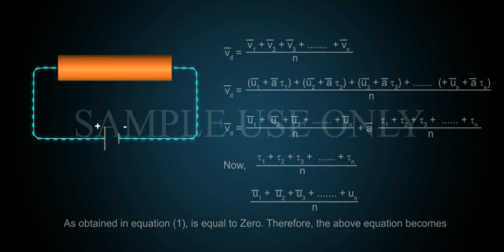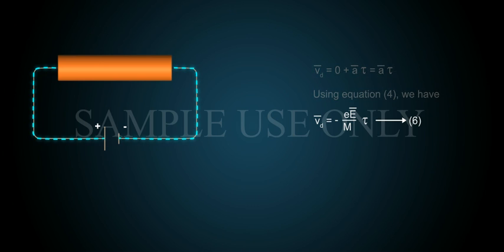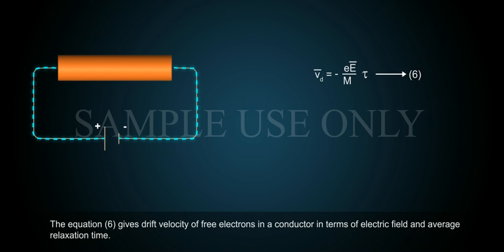Therefore, the above equation becomes vd bar equals 0 plus a bar tau, which equals a bar tau. Using equation 4, we have vd bar equals minus eE bar by m times tau — equation 6. This equation gives the drift velocity of free electrons in a conductor in terms of electric field and average relaxation time.